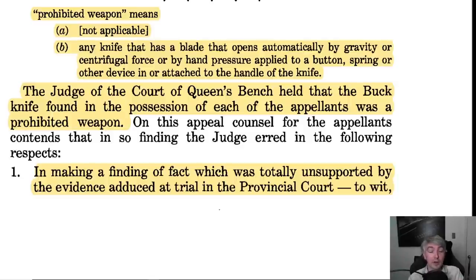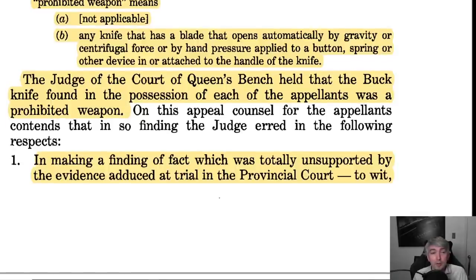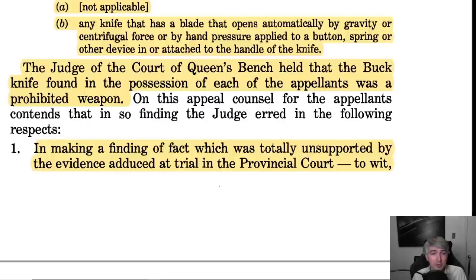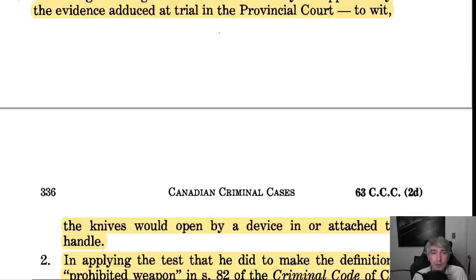Now there's going to be the question of what happens if you have a flipper — I'll probably deal with that more in a future video. The judge of the Court of Queen's Bench held that the buck knife found in the possession of each of the appellants was a prohibited weapon. On appeal, counsel argued a number of things. An appeals court isn't a trial level decision — it's a higher court examining a decision below and determining if it's correct. When you appeal a decision, you appeal on certain grounds and you have to tell them what issues you want them to look at.